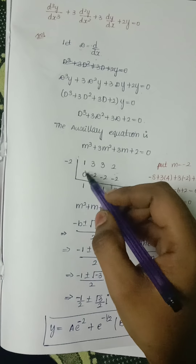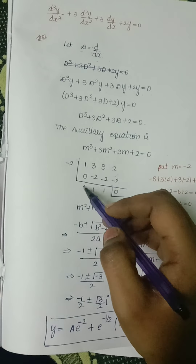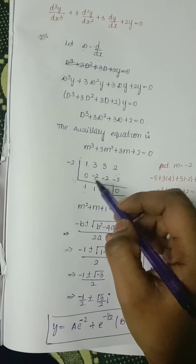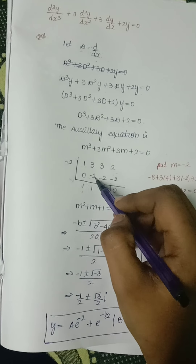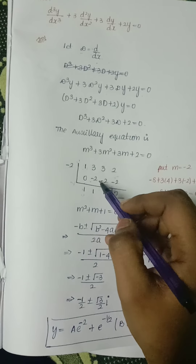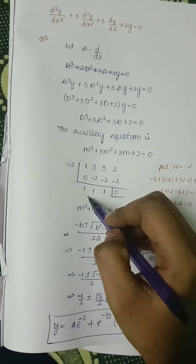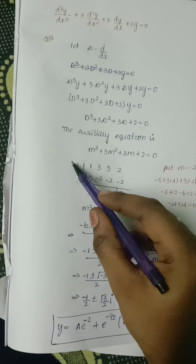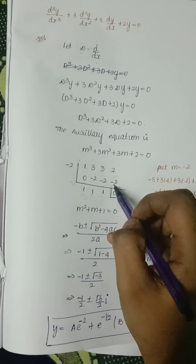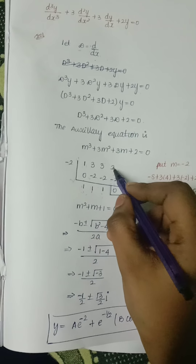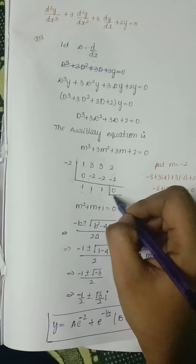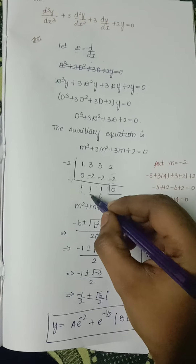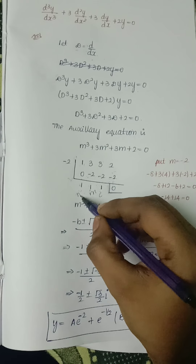In the synthetic division, we place 0 first, then add to get 1. Multiply -2 × 1 = -2, place it under the next coefficient: 3 + (-2) = 1. Multiply again, place -2 under the next, and 2 + (-2) = 0. We get a remainder of 0, confirming m = -2 is a root.